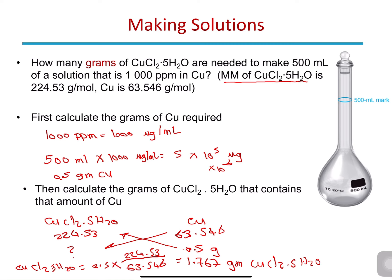If we have two copper atoms in the molecule, we would use less of the compound, because in this case there is one mole of copper per one mole of copper chloride pentahydrate. But if you have a compound with two of the element you're looking for, then it's one mole of that element to half a mole of the compound. So we use a different relation, because the amount of copper will not equal its molecular mass alone — it will be doubled.